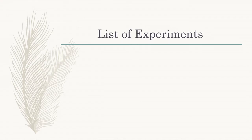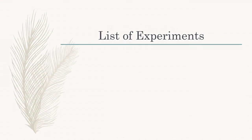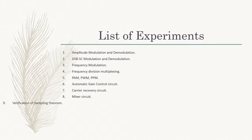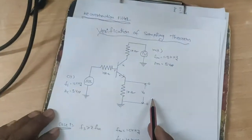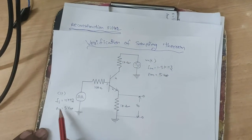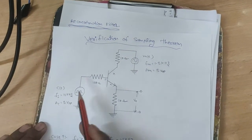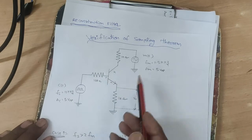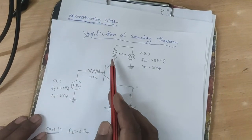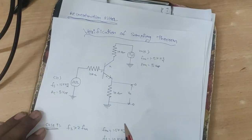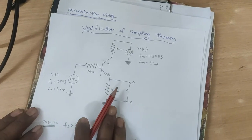The 9th experiment is Design and Verification of Sampling Theorem. In this circuit diagram, the sampling frequency is given to the base terminal of the BJT, the message signal is given to the collector terminal, and the output is observed on the emitter terminal.